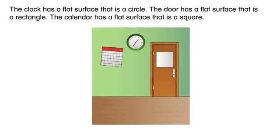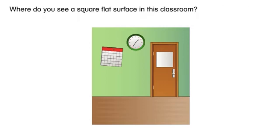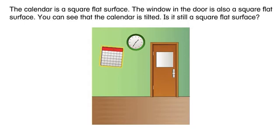The clock has a flat surface that is a circle. The door has a flat surface that is a rectangle. The calendar has a flat surface that is a square. Where do you see a square flat surface in this classroom? The calendar is a square flat surface. The window in the door is also a square flat surface. You can see that the calendar is tilted.